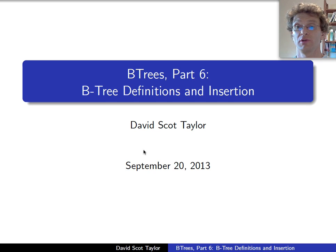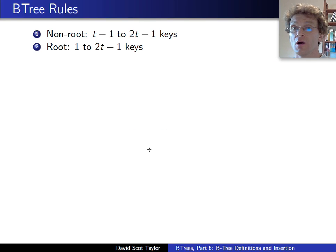This is the seventh video in the series, and at this point we are finally ready to officially define B-trees for you. In our non-root nodes we're going to allow ourselves to have anywhere from T minus one up to two T minus one keys, where T is a parameter of the B-tree.